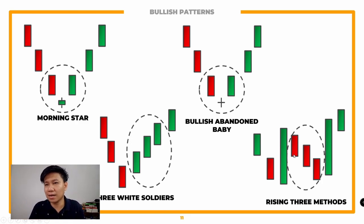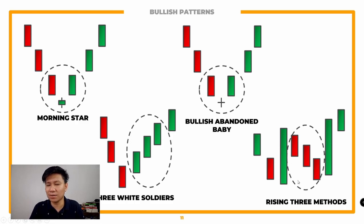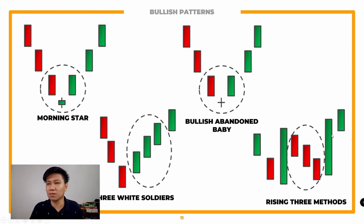Yung rising three — medyo kakabahala ka rin. What happens here: dapat meron kang napakalaking green candlestick muna, then magpo-pullback siya ng onti. Kapag nakakita ka ng three bearish candles pababa, pero as long as hindi siya lumagpas doon sa candlestick where it started, and mako-confirm siya pag nagkaroon ng green candle on the fourth day — so ito yung first, second, third day mo then magkakaroon ka na ng green na magkasing haba or mas mataas, confirming na nag-reverse na siya coming from a downtrend.